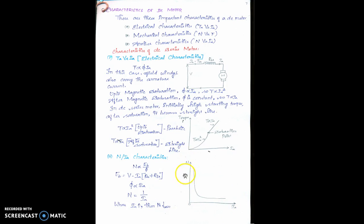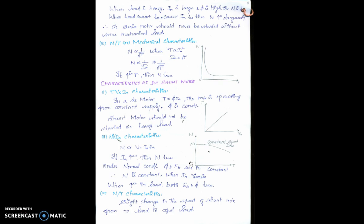For the general characteristics of the DC series motor, speed and armature current are inversely proportional, producing a hyperbolic curve. The mechanical characteristics are the same as the general characteristics, derived by comparing speed versus armature current. From this, we conclude that the DC series motor is a variable speed motor.